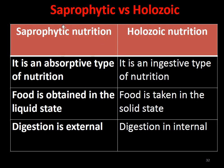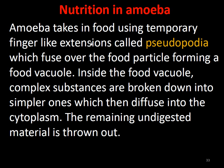The difference between saprophytic and holozoic nutrition: saprophytic is an absorptive type of nutrition wherein food is obtained in liquid state and digestion is external (outside the body). Holozoic involves ingestion and internal digestion; food is taken in solid or liquid form but preferably solid, and digestion occurs inside the body.